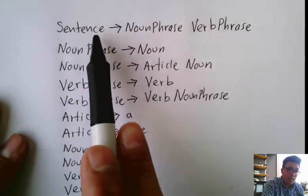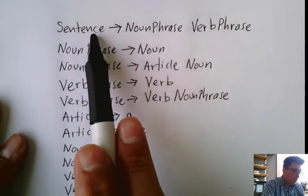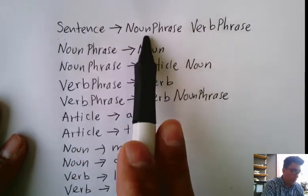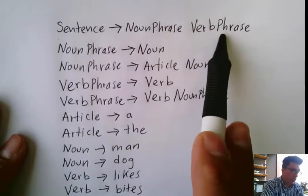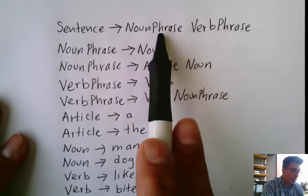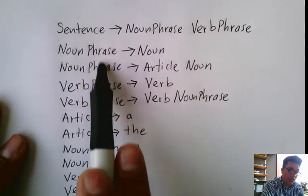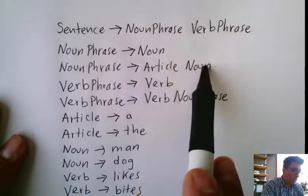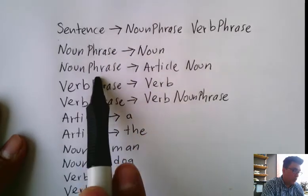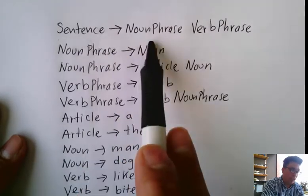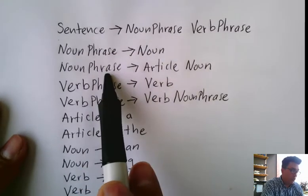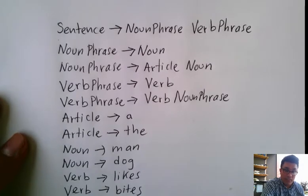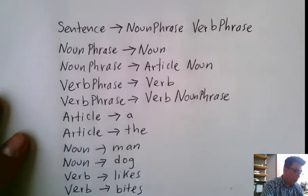So a sentence, in this case, is composed of a noun phrase and a verb phrase — it has those two parts. Then there are noun phrases with two possible definitions: a noun, or an article followed by a noun. So there are two options — this is like an OR — so we can have two possible options. We have some examples of generated sentences using a context-free grammar.